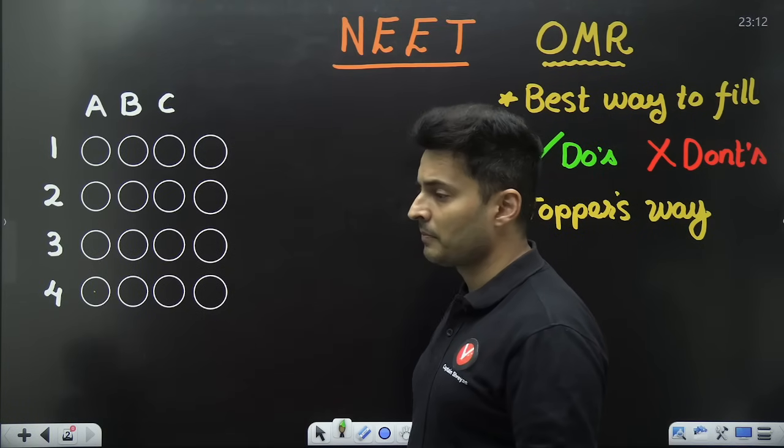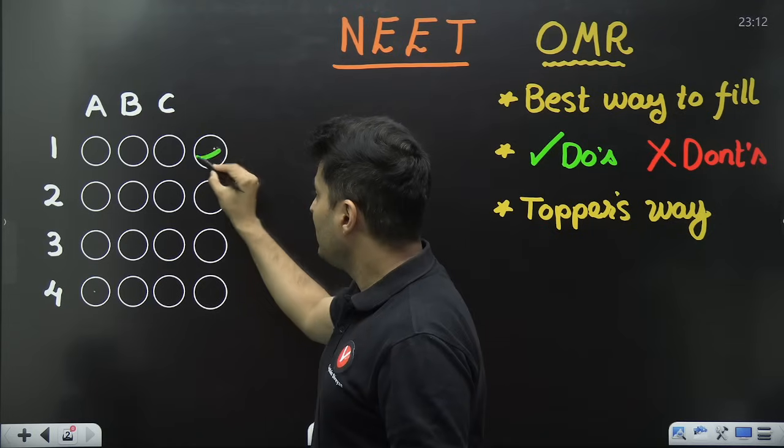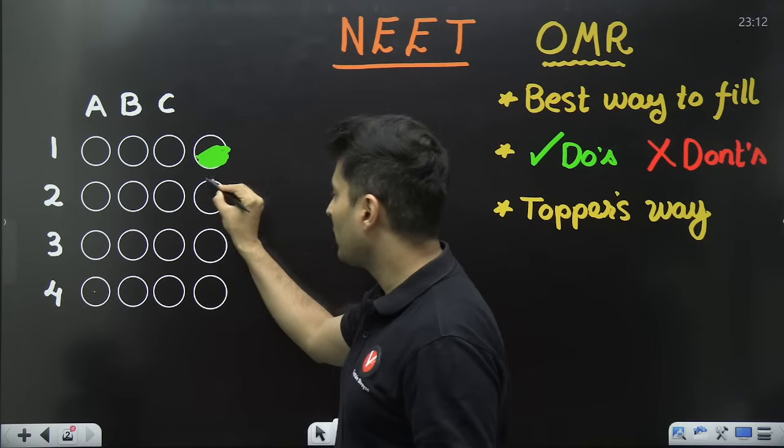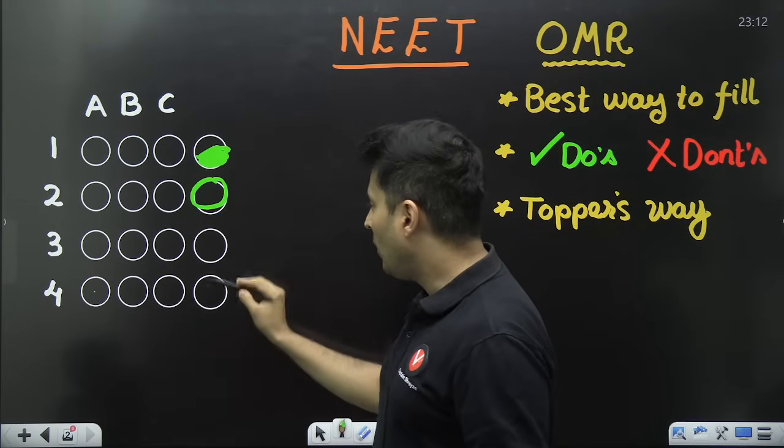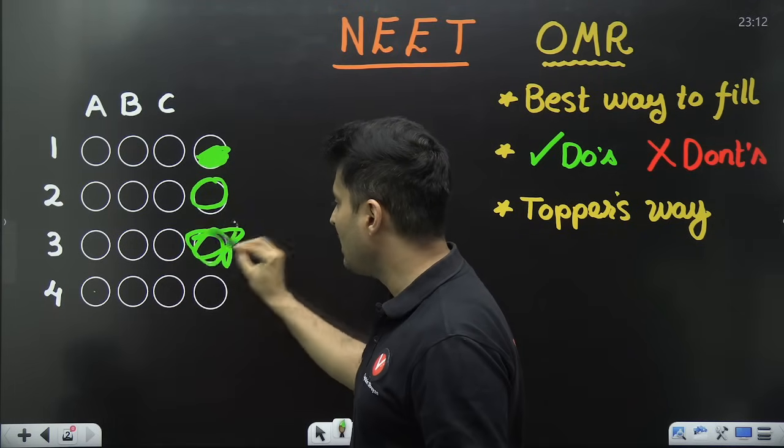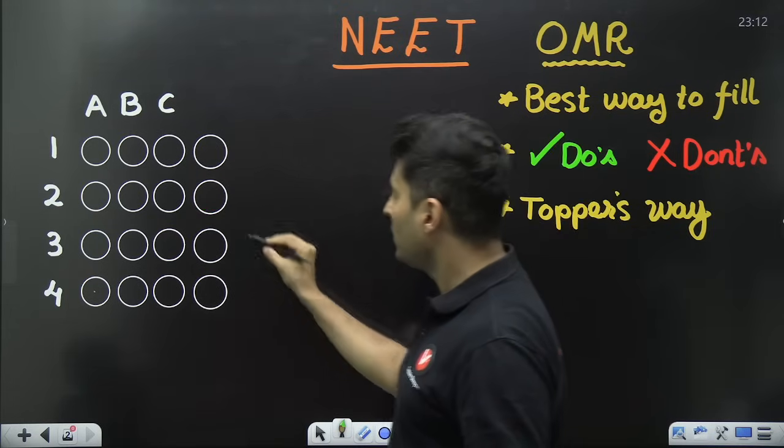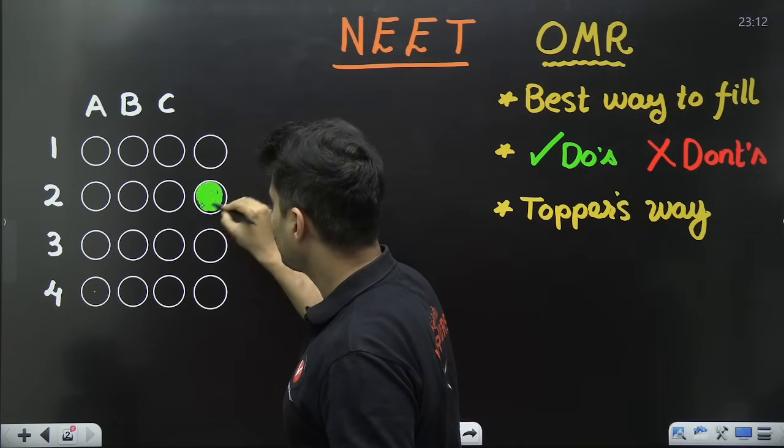Now when you are bubbling be careful. Obviously these kind of bubbles are not allowed. Half filled bubbles or just putting one circle or going completely outside. No these are the things which are definitely not allowed. Your bubble should be something like this.